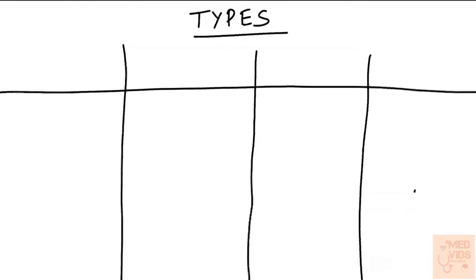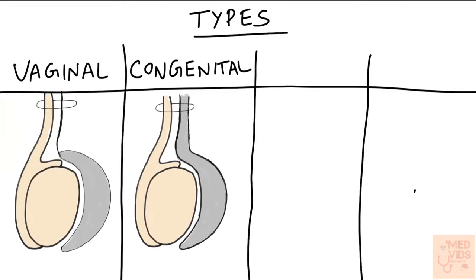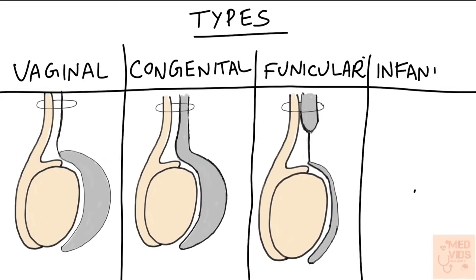We have seen the etiological classification. Now let's see the classification of hydrocele based on where the defect is. The four important types are vaginal hydrocele, congenital hydrocele, funicular hydrocele, and infantile hydrocele.